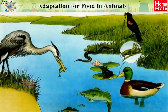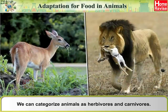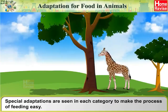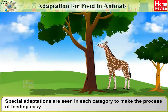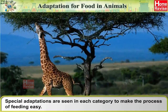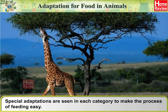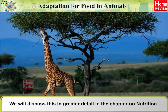Adaptation for Food in Animals: We can categorize animals as herbivores and carnivores. Special adaptations are seen in each category to make the process of feeding easy. We will discuss this in greater detail in the chapter on nutrition.